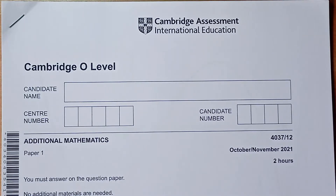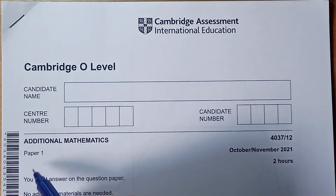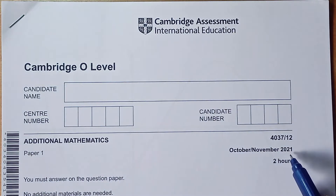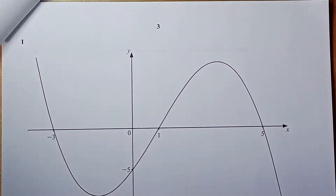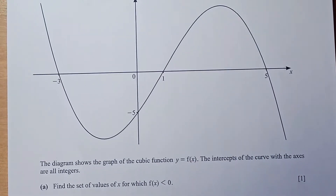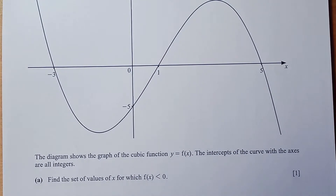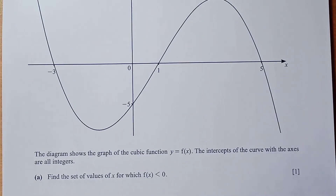Hi everyone. In this video we are going to solve O-Level's Additional Mathematics Paper 1, session October-November 2021, Paper 1-2. So let's begin with the first question. In question number 1, the diagram shows the graph of a cubic function y equals f of x. The intercepts of the curve with the x-axis are all integers. Now in part a, find the set of values of x for which the function is less than 0.